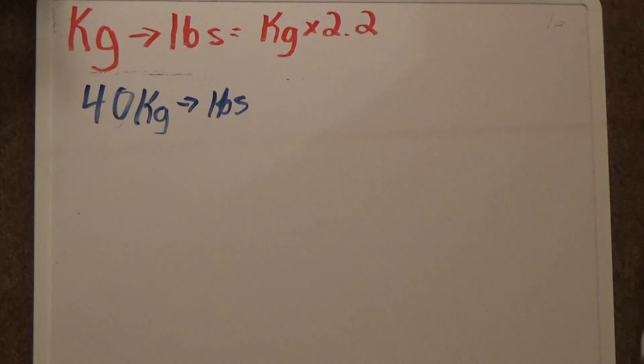Converting kilograms to pounds is actually fairly simple. You take your kilograms and you multiply by 2.2.